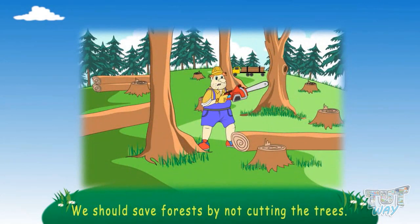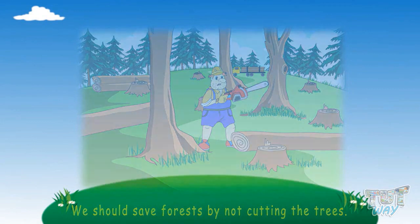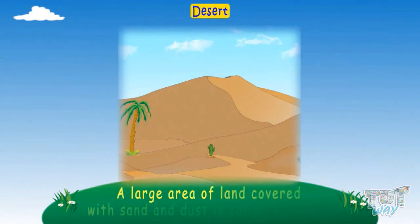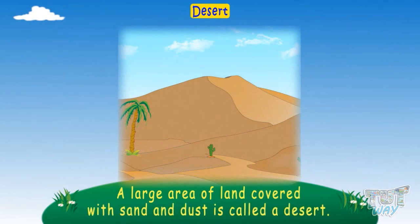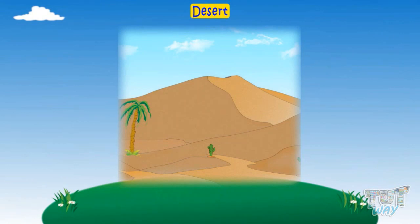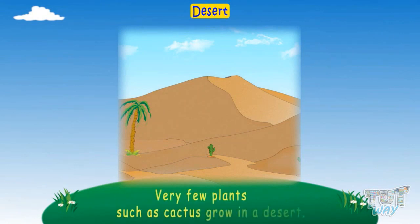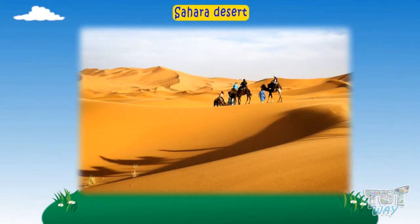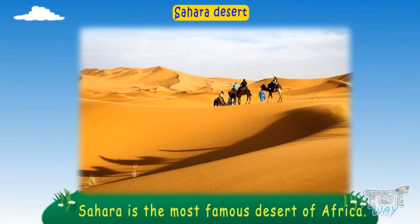We should save forests by not cutting the trees. A large area of land covered with sand and dust is called a desert. Very few plants, such as cactus, grow in a desert. The Sahara Desert is the most famous desert of Africa.